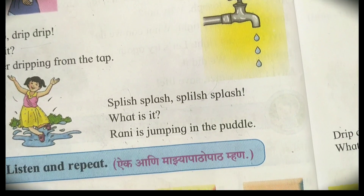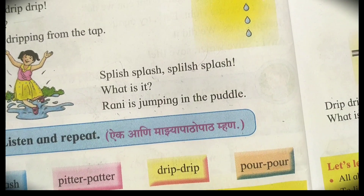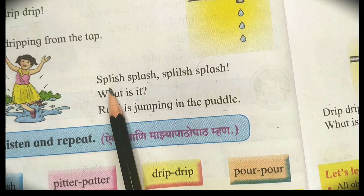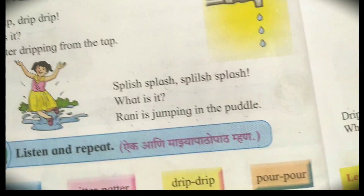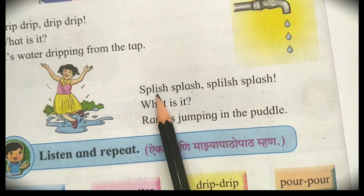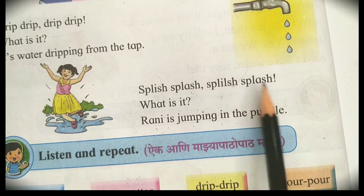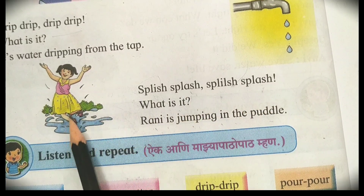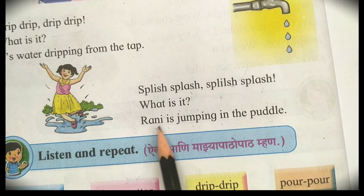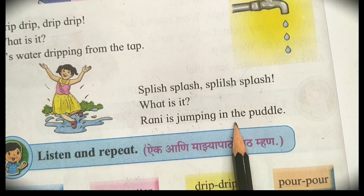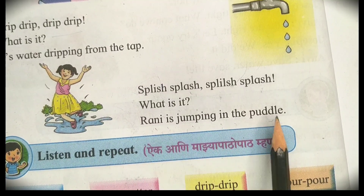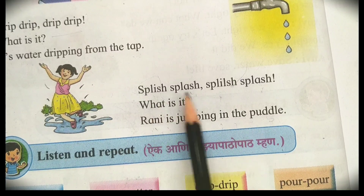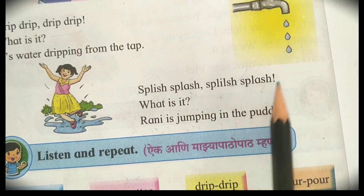Next sound: splish splash, splish splash. What is it? Rani is jumping in the puddle. The sound of jumping in a puddle is splish splash.